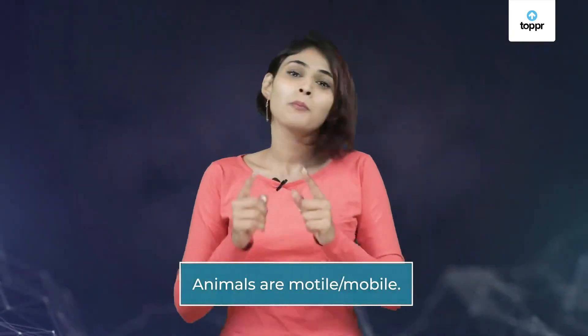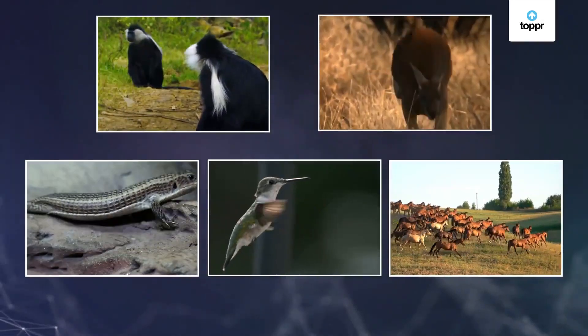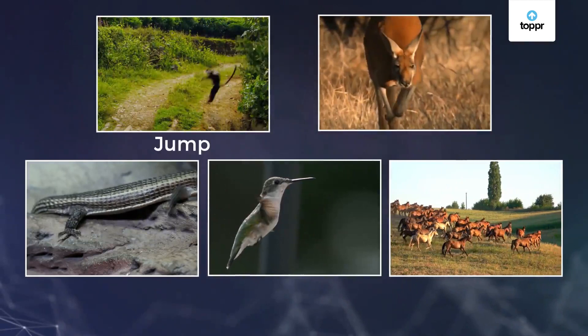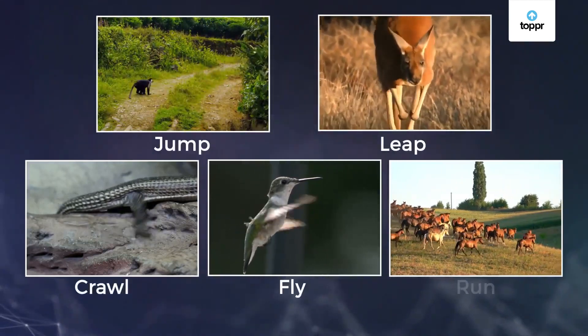The characteristic that makes the animals stand out among all the kingdoms is their mobility. Animals can move from one place to another — they jump, leap, crawl, fly and run.